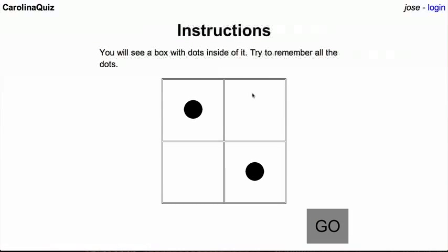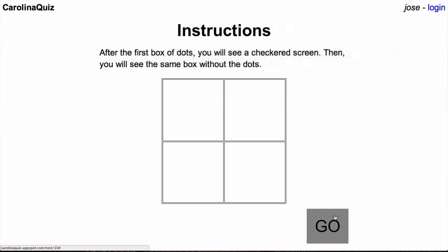You will see a box with dots inside of it. Try to remember all of the dots. You see that's Julia giving you instructions about how to take this test, and the little go button lights up and we can press it.